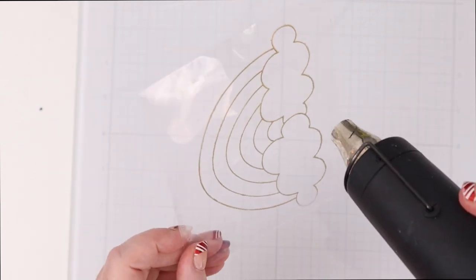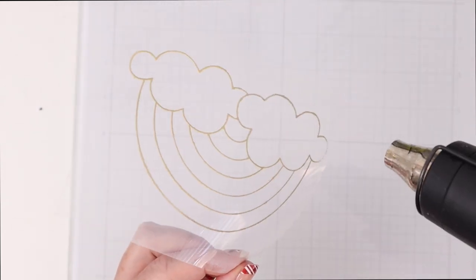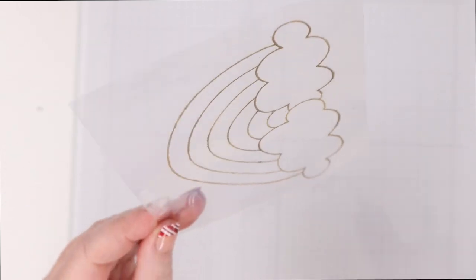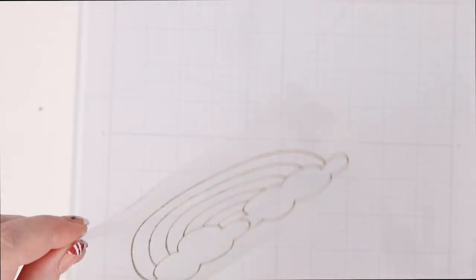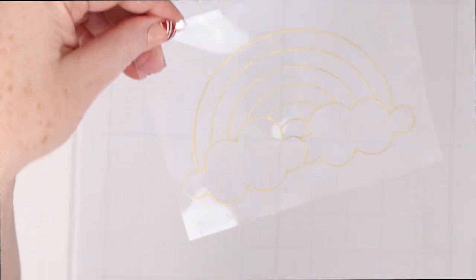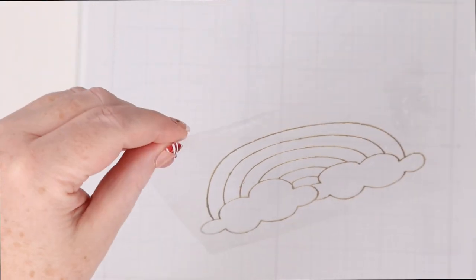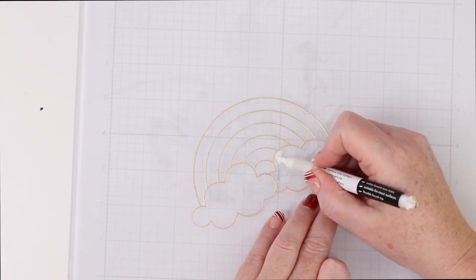So again when you're heat setting on that embossable plastic get the tool nice and hot and then just hold it to the stamped image for a few seconds and then bring it away this way you don't get too much warping. It may still warp a little bit and that's okay.